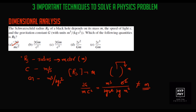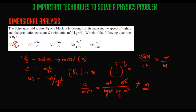So Option A is not the Schwarzschild radius. Looking at Option B: RS = 2GM/C². Applying the units — G is m³/(kg·s²), multiplied by mass M in kg, divided by C² which is m²/s². The kilograms cancel, and we are left with m³/m² = meter.